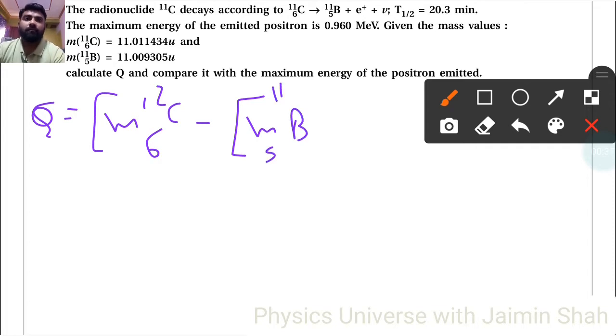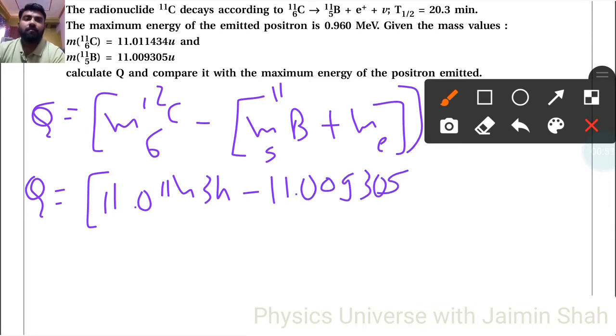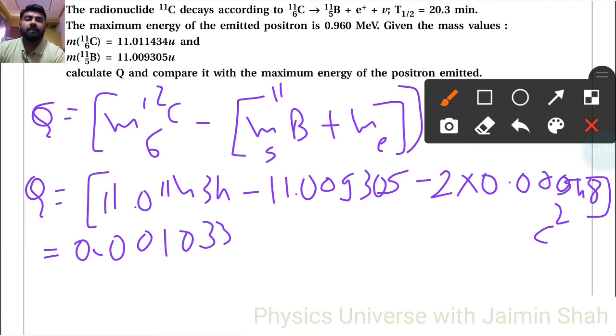So Q equals the mass of carbon 11.011434 minus 11.009305, minus the mass of the electron, so 2 times 0.000548, complete bracket, times c². This calculation gives 0.001033 times c². Now c² is 931.5, so 0.001033 times 931.5.